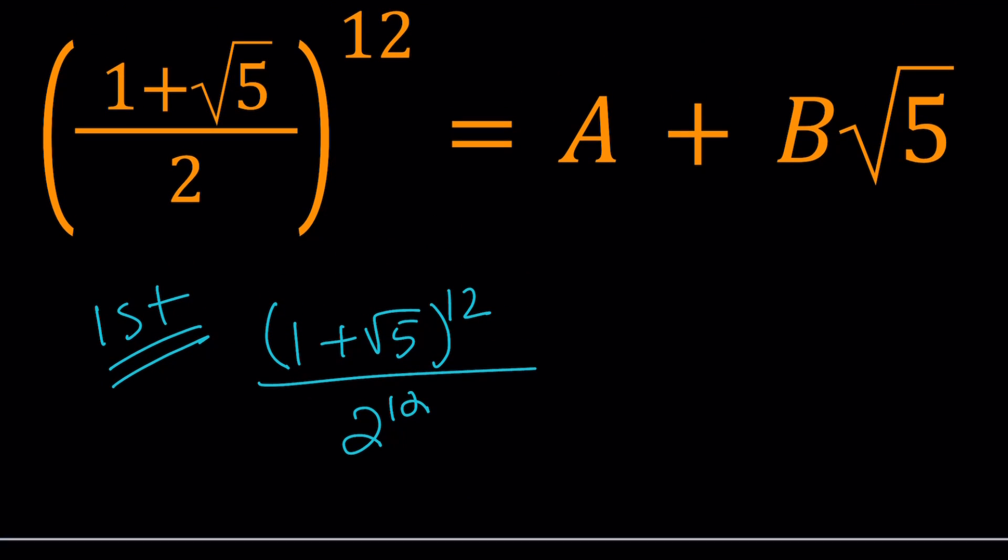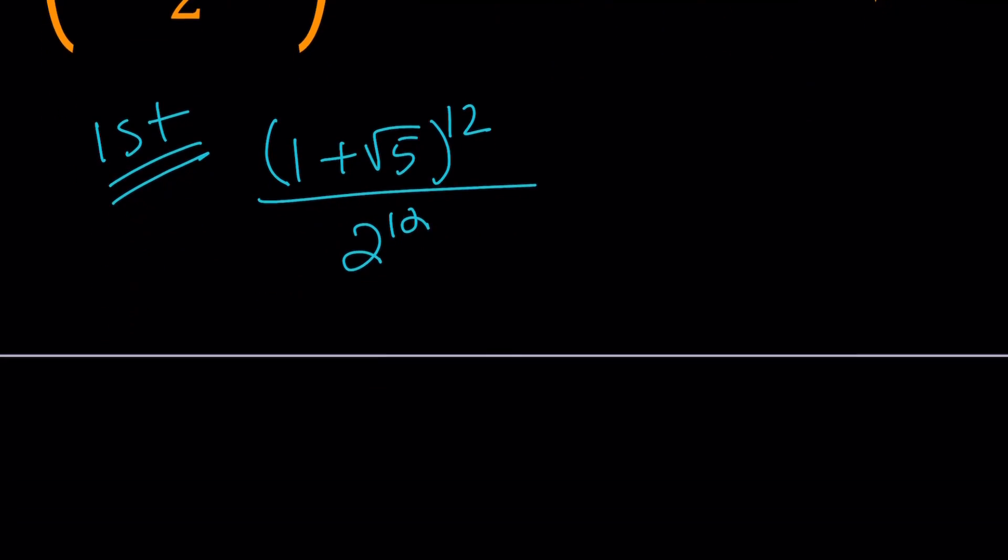Now we're going to need to raise 1 plus root 5 to the 12th power. And that can be done with the binomial theorem. If you just expand it, you're going to get 13 terms, which is not very good. So we might as well do the following. We could just square it and then square it and then square it until we get to 4th power. Or you can just cube it and then square it twice after that. There's a couple of different ways you can go about it.